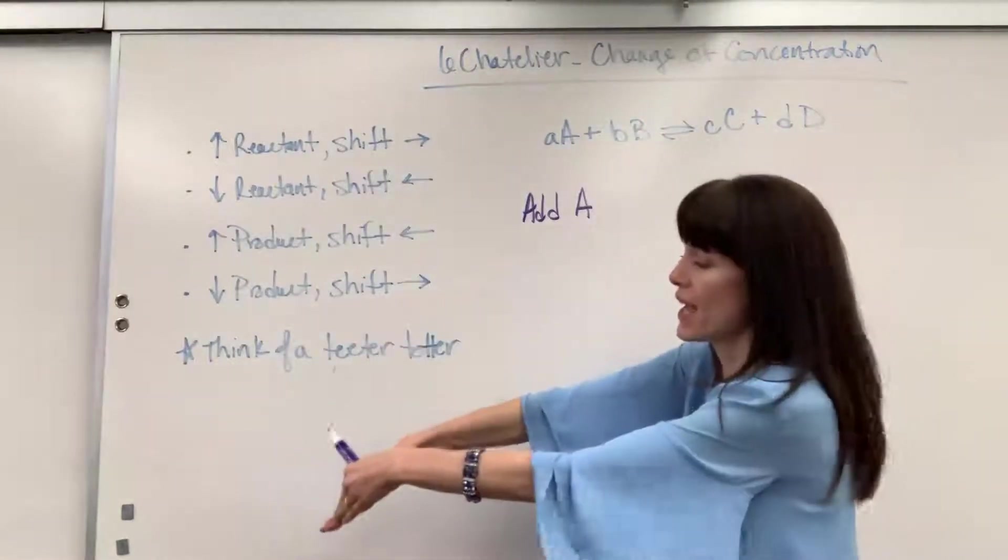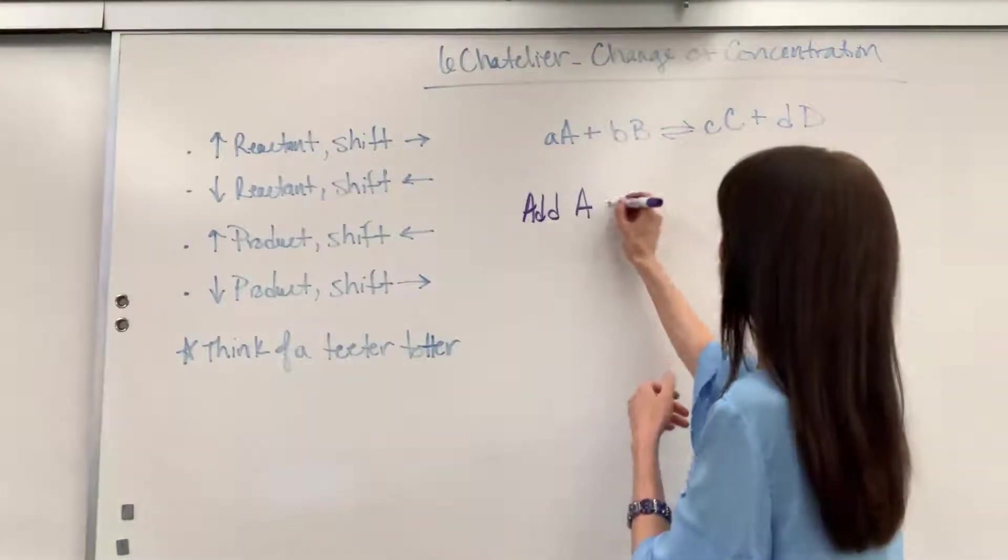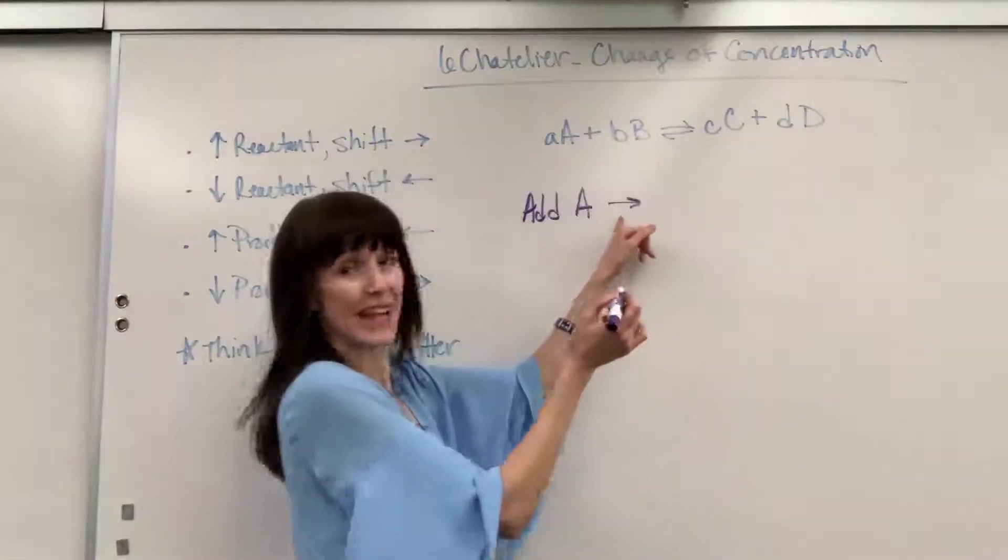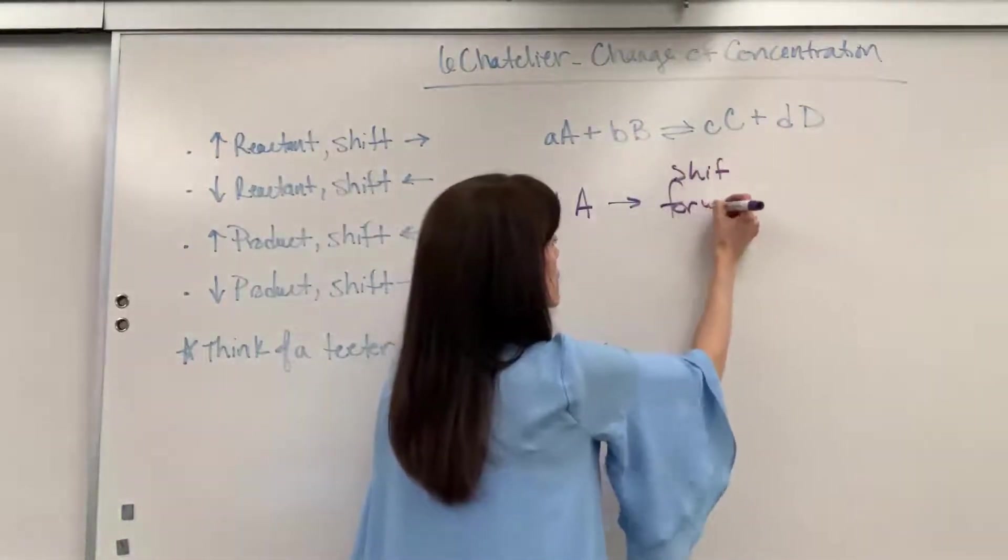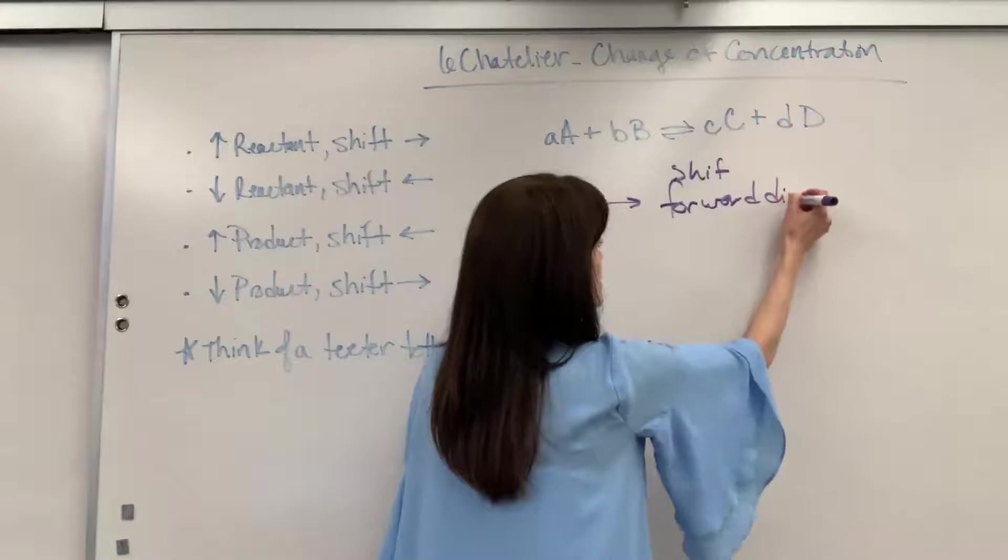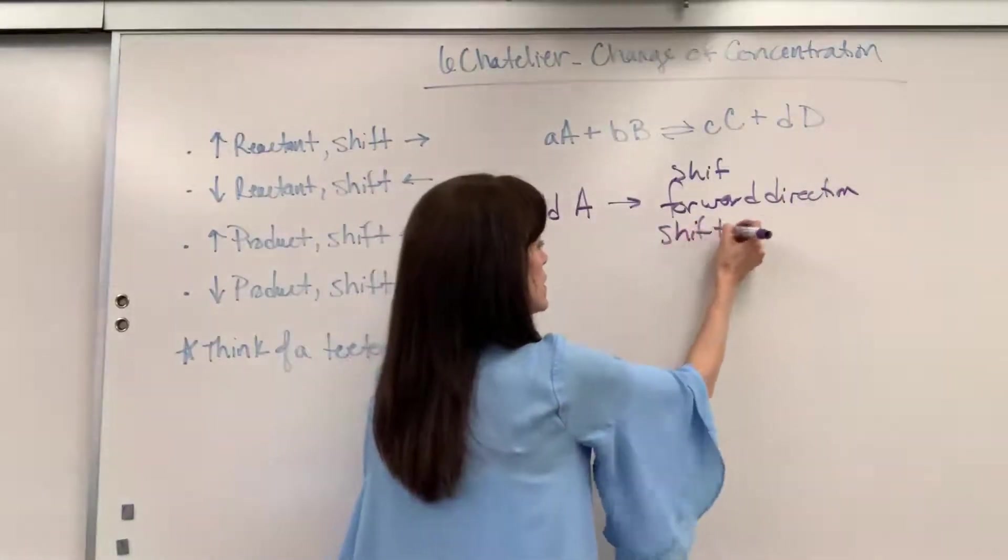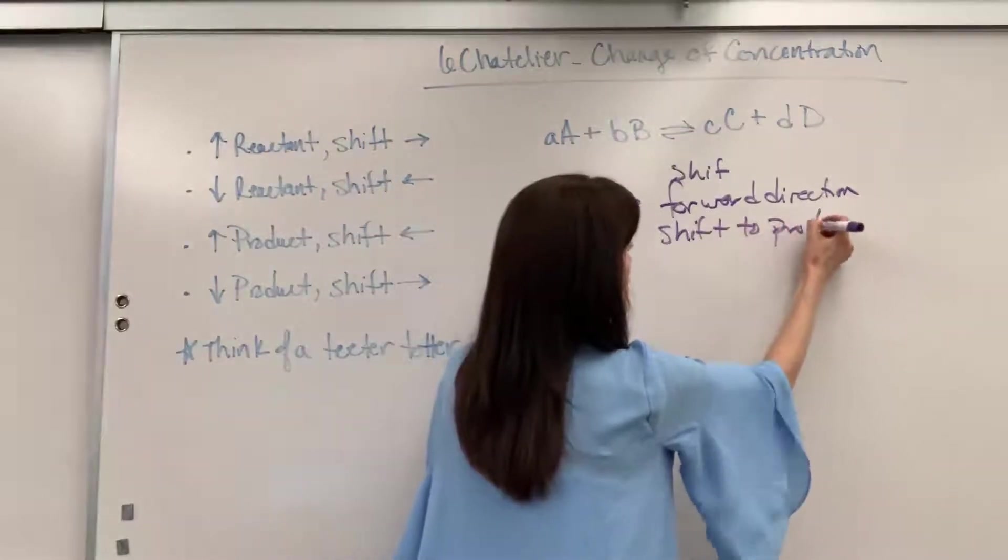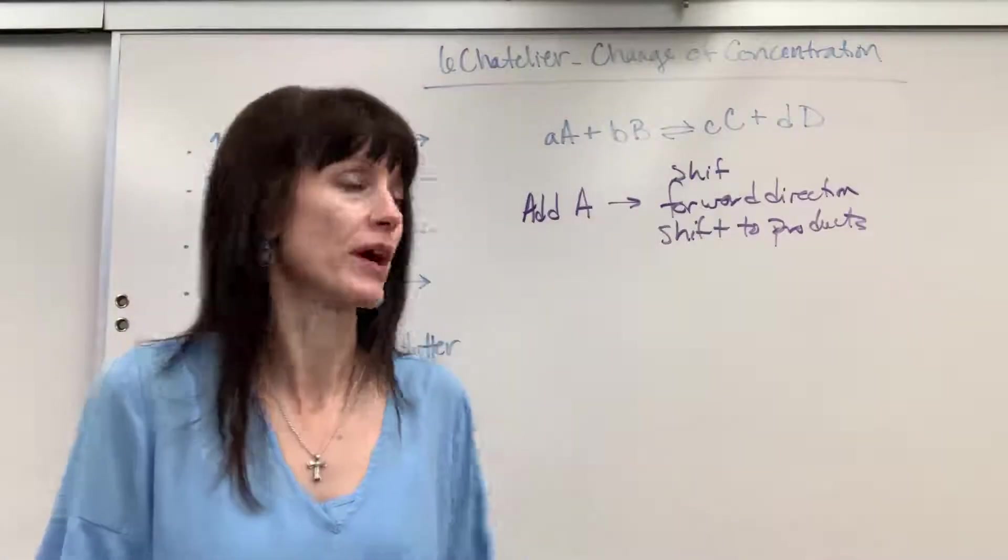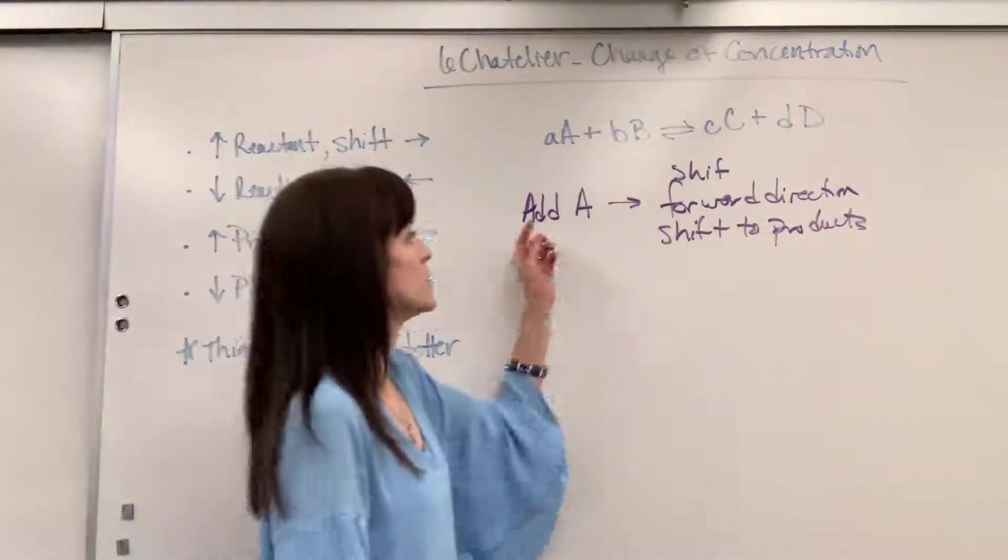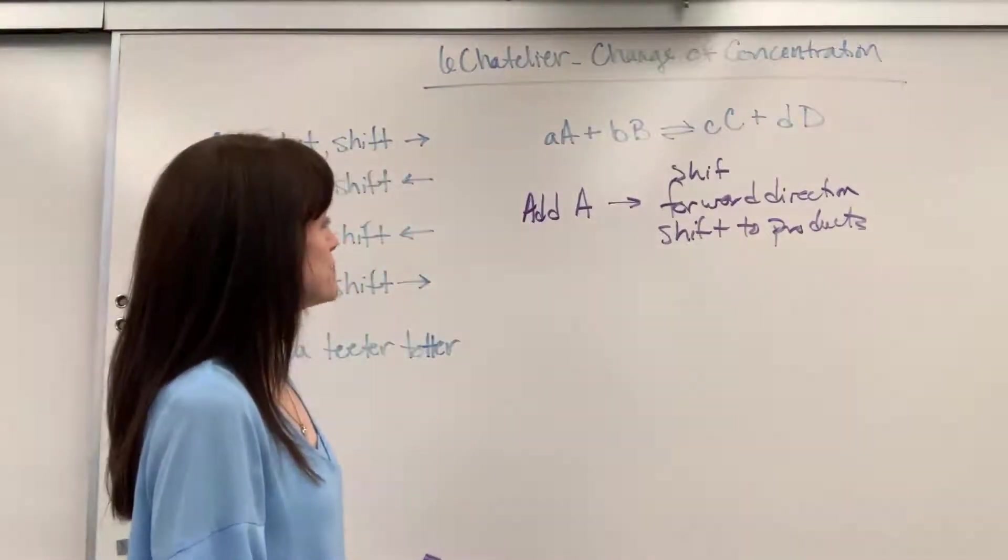So if I add A, it's going to go in the forward direction. So I put the arrow here, it's going to shift in the forward direction. Another way that you could say this is that it's going to shift to products. Or if you want to really write it out, you could say it's going to consume reactants, produce products. Much easier just to say shift forward, shift to the products.